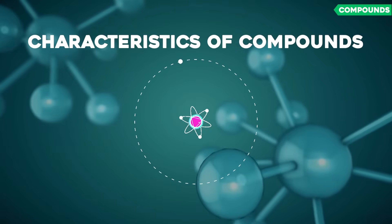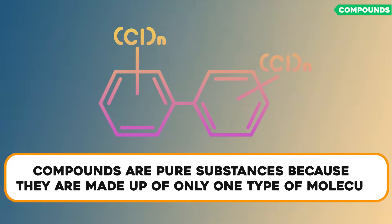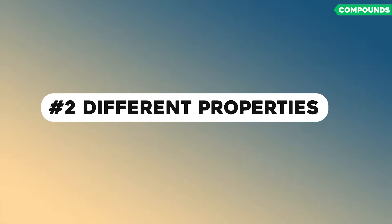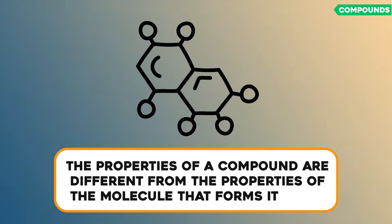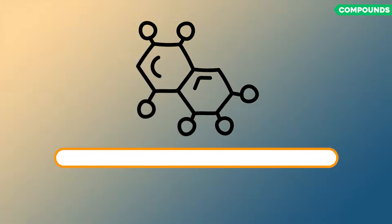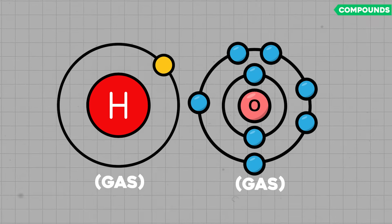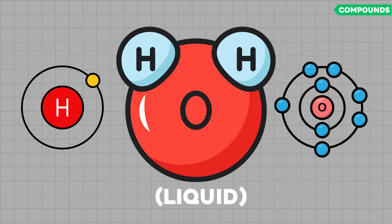Characteristics of Compounds. Here are some key characteristics of compounds. First, pure substances: compounds are pure substances because they are made up of only one type of molecule. Second, different properties: the properties of a compound are different from the properties of the elements that form it. For example, hydrogen and oxygen are both gases, but when they combine, they form water, a liquid.